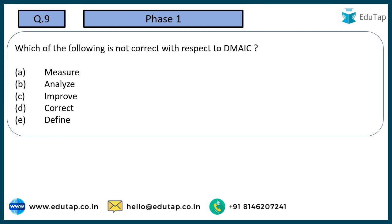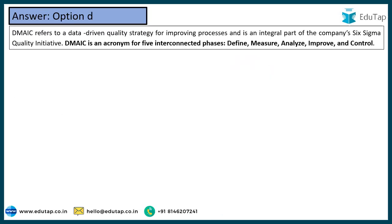Coming to the next one: which of the following is not correct with regard to DMAIC? Options are measure, analyze, improve, correct, define. DMAIC stands for Define, Measure, Analyze, Improve, and Control — C stands for Control, not Correct. So option number D — 'correct' — is the incorrect term. DMAIC is a data-driven strategy for improving processes and is part of the Six Sigma quality initiative. The five interconnected phases are: define, measure, analyze, improve, and control. So option number D is the correct answer.